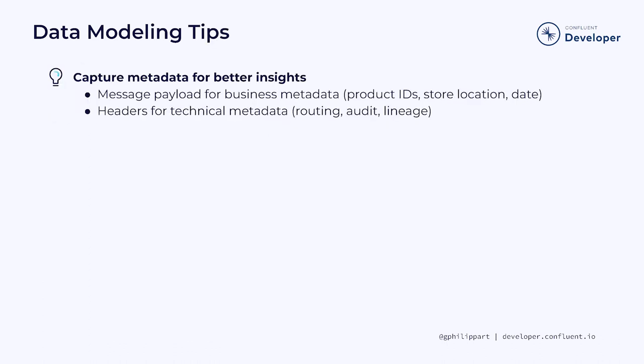Our first data modeling tip is to capture metadata for better insights. Business metadata is data that adds business context to other data. Let's say a retail company wants to develop an event-driven system to track their store inventory — they might have events like new shipment received, item sold, and item returned. To extract better insights from the data, each event should include important information like the product and shipment ID, how many items were received or sold, and where the store is located. With Kafka, you should use the message payload to store that business metadata.